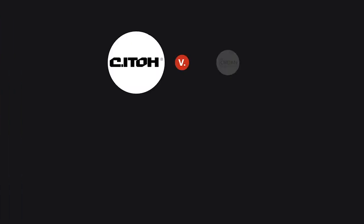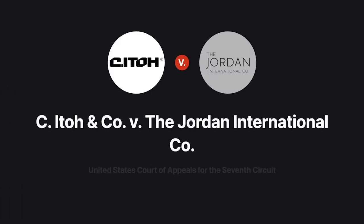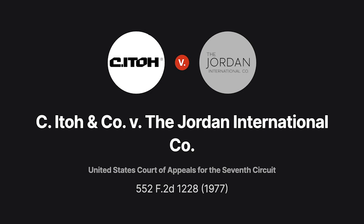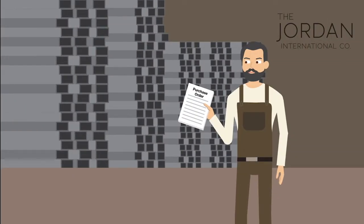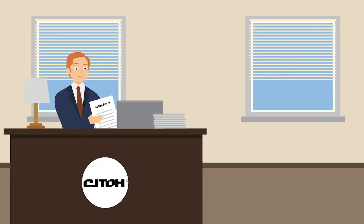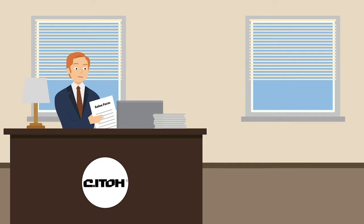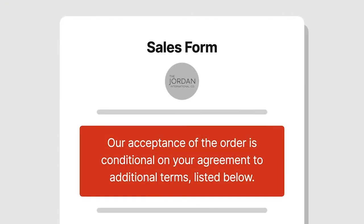The Seventh Circuit considered that question in C. Ito & Company versus the Jordan International Company. C. Ito & Company sent the Jordan International Company a purchase order for steel coils. Jordan replied by sending its standard sales acknowledgement form. The form stated that Jordan's acceptance of the order was conditional on Ito agreeing to additional terms listed on the form, which included an arbitration clause.